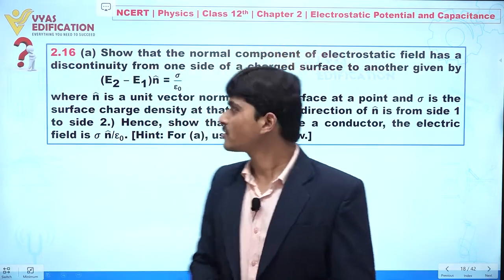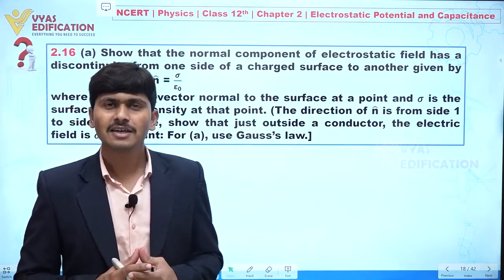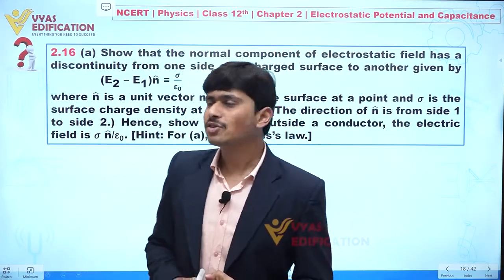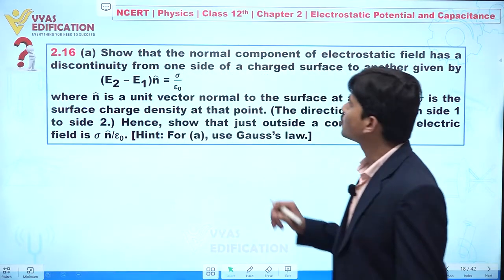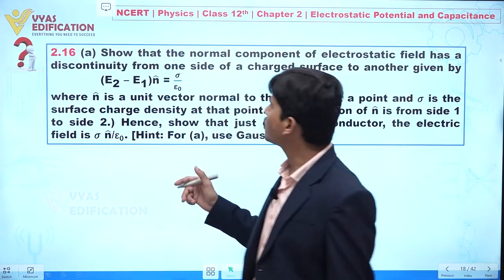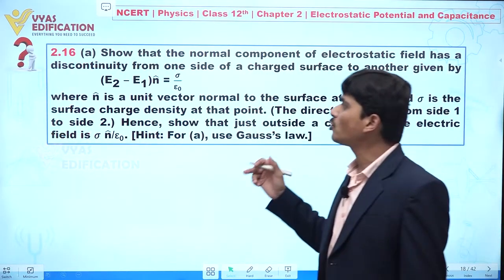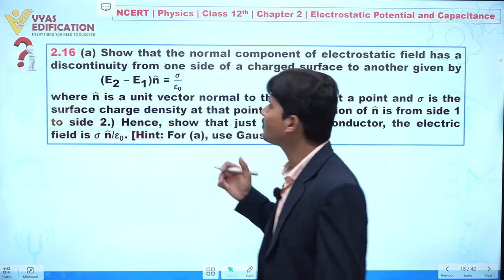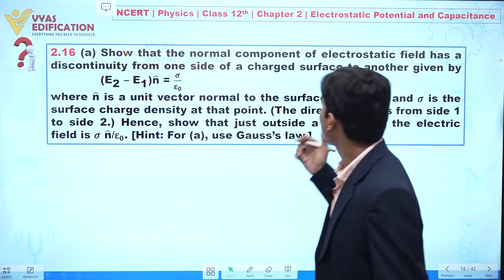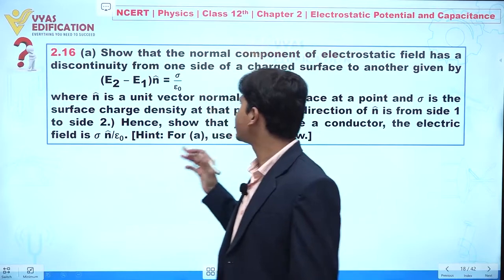We are going to discuss question number 2.16, and in this question we have two parts. First, we are going to discuss part number (a). In this question, it is given that we have to show that the normal component of an electrostatic field has a discontinuity from one side of a charged surface to another, given by (E2 minus E1) dot n-hat equals sigma upon epsilon-naught, where n-hat is a unit vector normal to the surface and sigma is surface charge density.